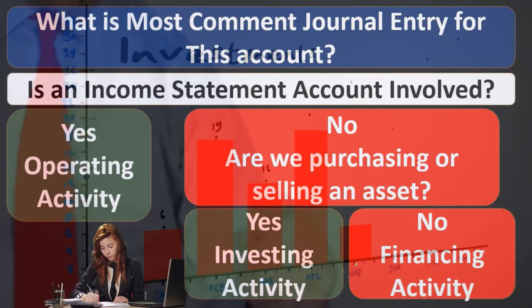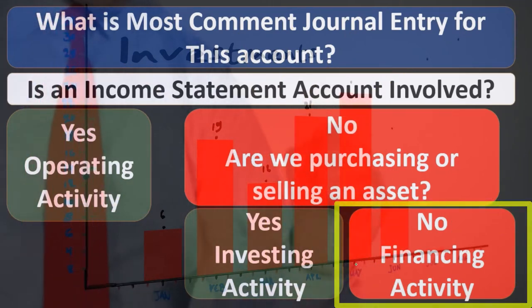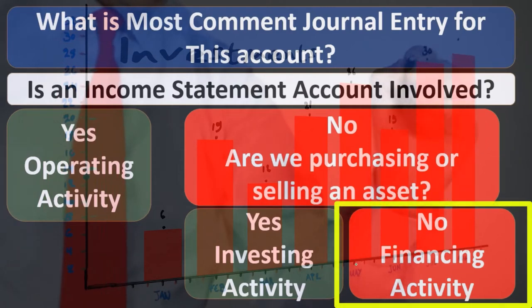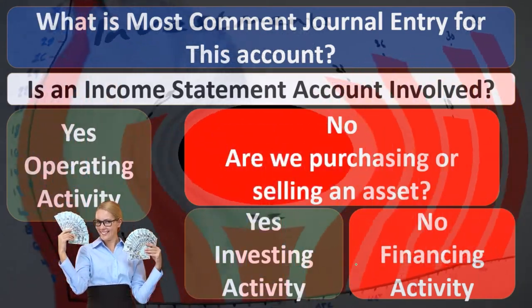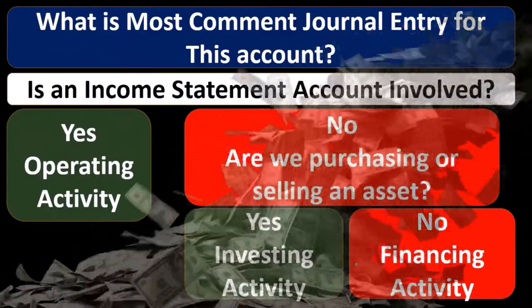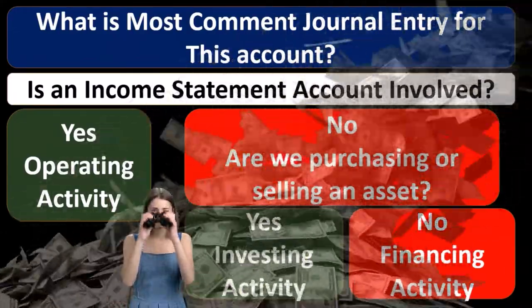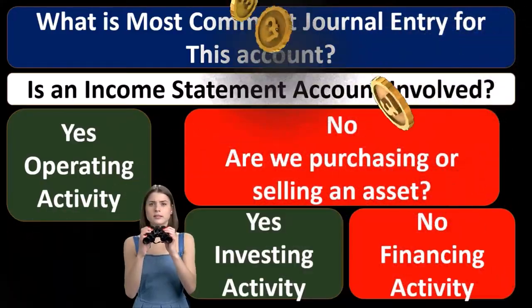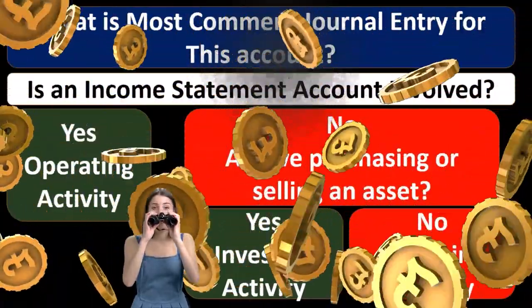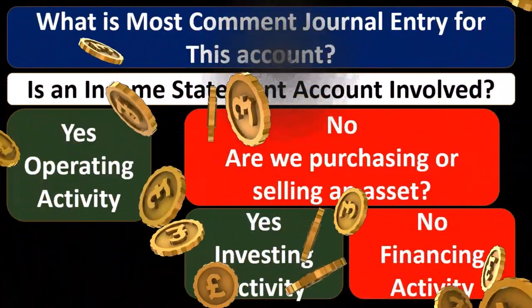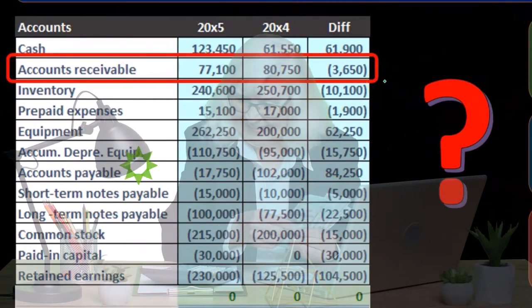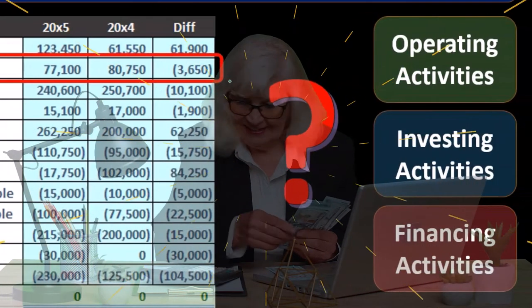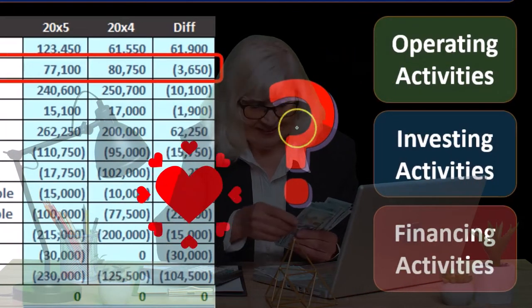If it's not an investing activity either, then it's going to be financing. Financing deals with notes and things that don't involve the income statement — no revenues or expenses — and typically doesn't involve assets, because what we're doing is funding the company. That's typically going to be something that deals with cash and some type of liability or the equity section. This is our thought process: go through each line item on the balance sheet and think about which category we're going to put that change into.